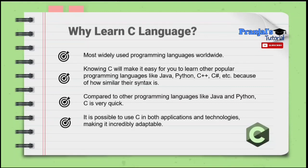Learning C makes it easier to learn languages such as Java, Python, C++, and C# because they are all quite similar. Compared to other programming languages like Java and Python, C is very fast.